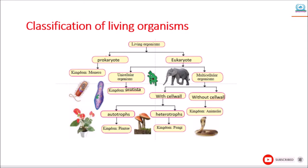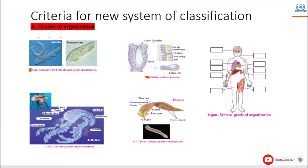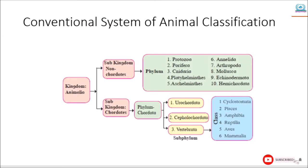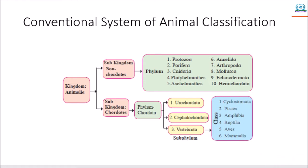In the last part of this chapter, that is part 1, we learned about Criteria for Classification, History of Animal Classification, and Conventional System of Animal Classification. So watch part 1 completely before watching part 2, because all the basics of this chapter are in part 1. If you have not watched part 1, it will be difficult for you to understand part 2.